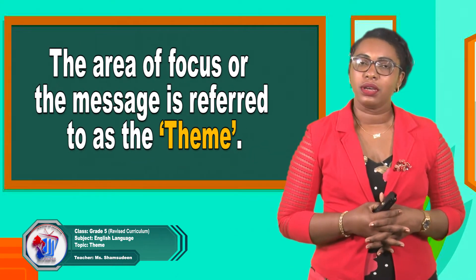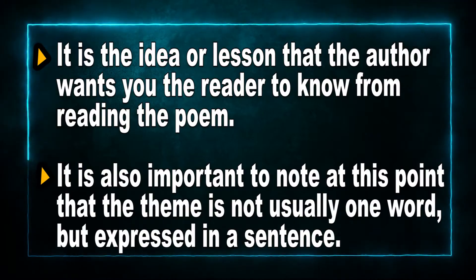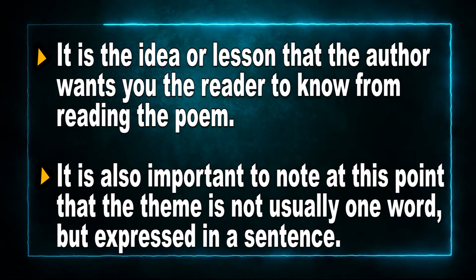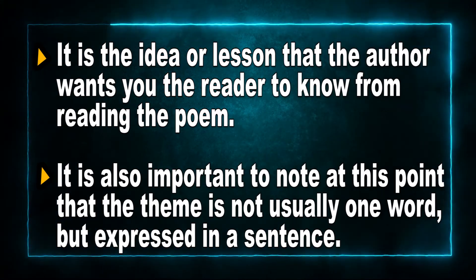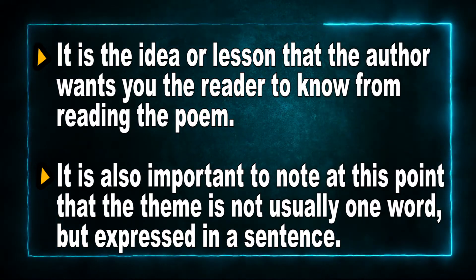When a poet writes a poem, they are usually focused on a main idea. They want you to understand something, or they're trying to send a message to you. The area of focus or the message is referred to as the theme. The theme in a poem is the big idea of the text — the idea or lesson that the author wants you, the reader, to know. It is important to note that the theme is not usually one word, but expressed in a sentence.